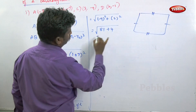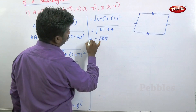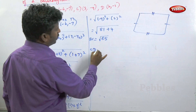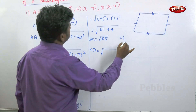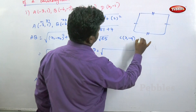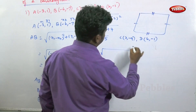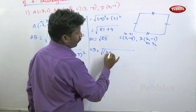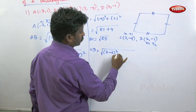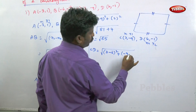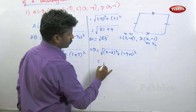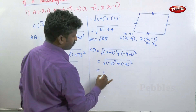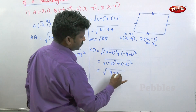That gives root of (-9) whole square plus (2) whole square, equal to root of 81 plus 4, so BC is equal to root 85. Next, CD: C point is (3, -9) and D point is (6, -1). CD is equal to root of (3 minus 6) whole square plus (-9 minus (-1)) whole square, which is root of (-3) squared plus (-8) squared.